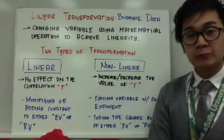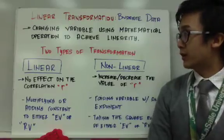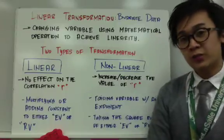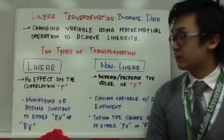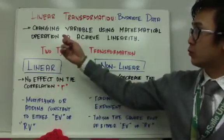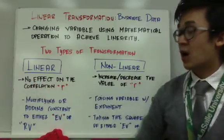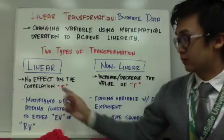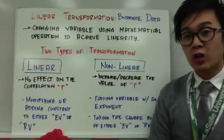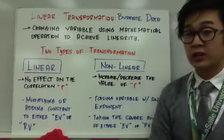There are two types of transformation in this chapter: linear transformation and non-linear transformation. In a linear transformation, if we perform an operation changing either the explanatory variable or the response variable, there will be no effect on the correlation coefficient, or the value of r. In a non-linear transformation, the correlation coefficient may increase or decrease in the process.